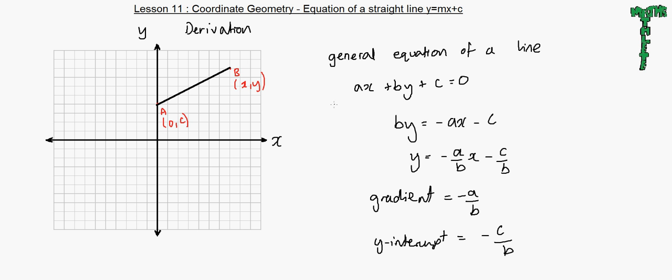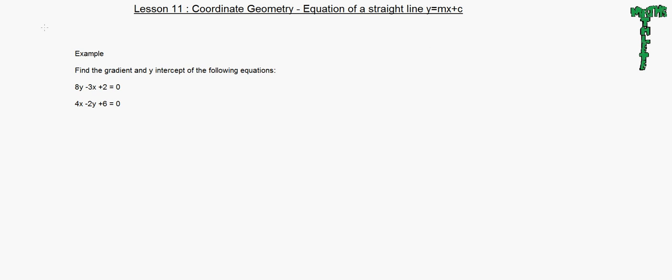So now, let's look at an example where this actually happened. So here's the example. So the question asks us, find the gradient and y intercept of the following equations. So here we have both equations in the form of the general equation of a line. So what they want us to do is they want us to rearrange this general equation and put it in the form of y equals mx plus c, where we can work out the gradient and y intercept.